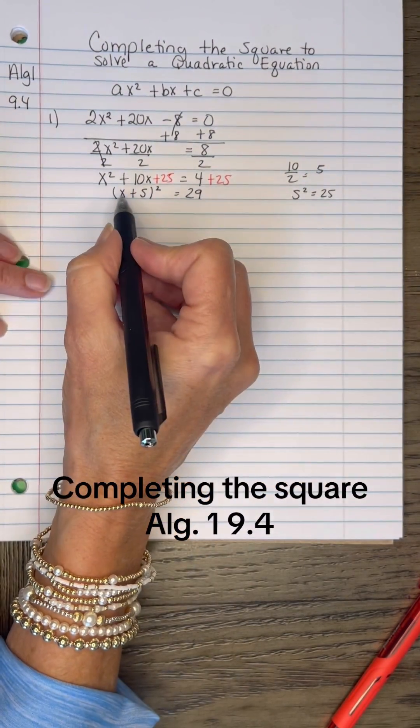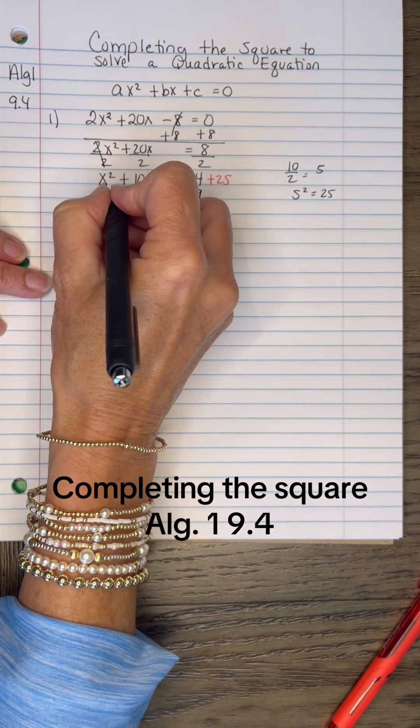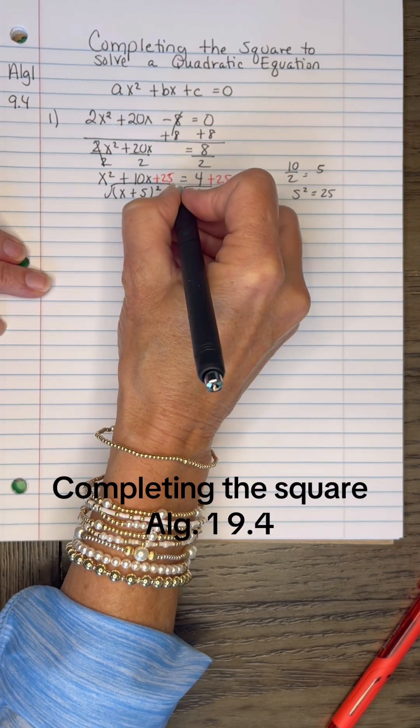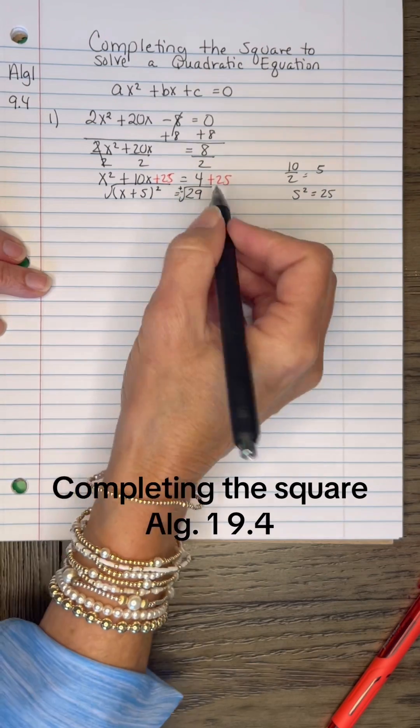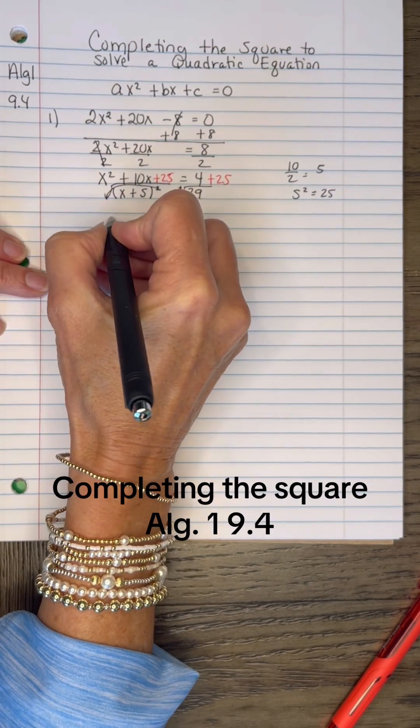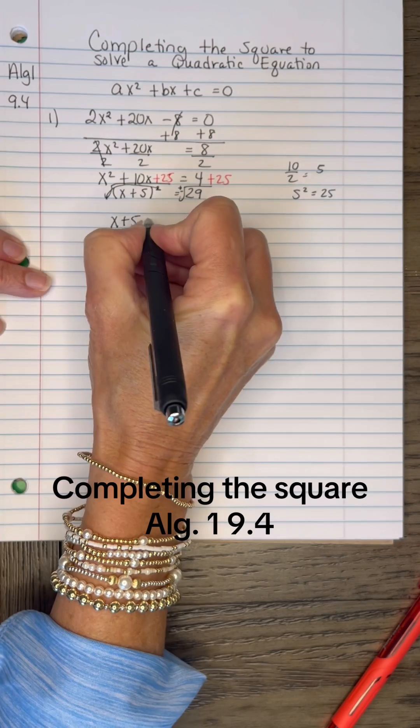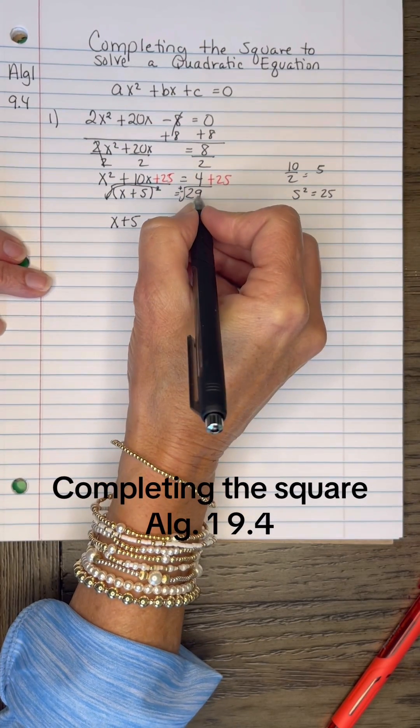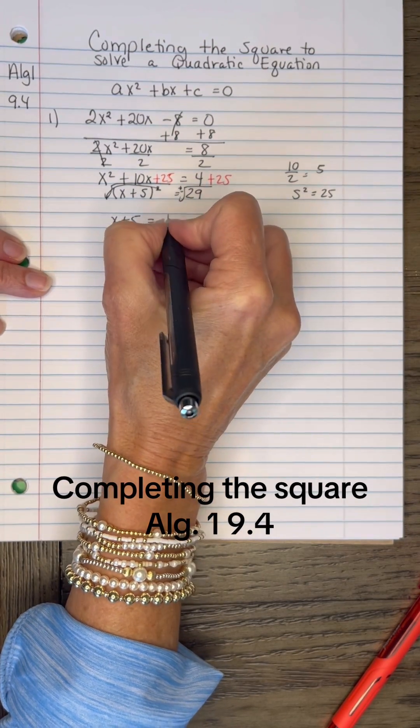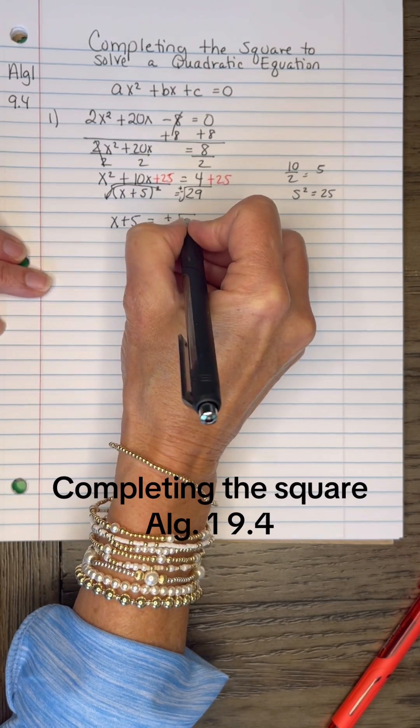Now to solve for X, I will take the square root of both sides, and that will be a positive or negative answer. The square cancels the square root out, so X plus 5 is free from the radical. And 29 is not a perfect square, so I'm just going to leave it as positive or negative square root of 29.